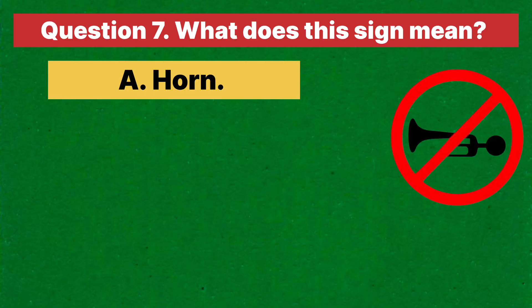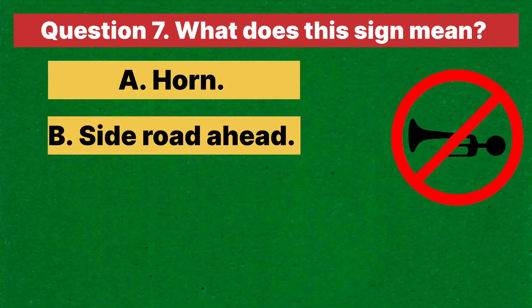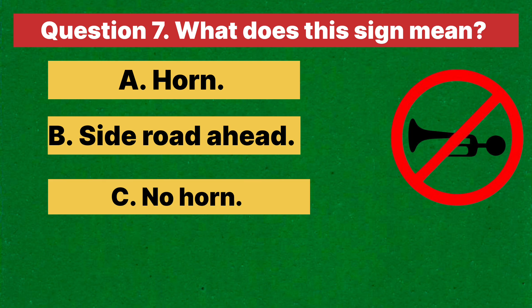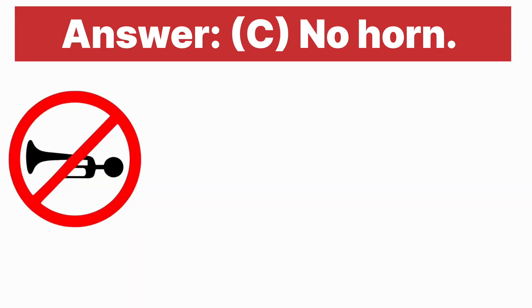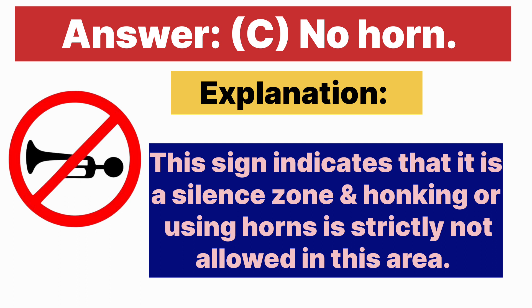Question seven: What does this sign mean? A. Horn. B. Side road ahead. C. No horn. D. None of the above. Answer is C, no horn. Explanation: this sign indicates that it is a silent zone and honking or using a horn is strictly not allowed in this area.